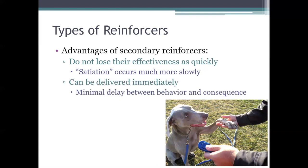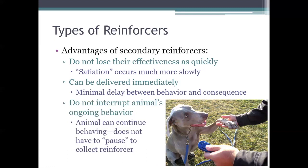Another advantage of using the clicker as a secondary reinforcer is that it can be delivered immediately — right after the dog does what you want it to do, you can click that clicker. You can present that secondary reinforcer immediately instead of after a delay like you'd have to do with a primary reinforcer. And also, with the clicker the dog doesn't have to stop what it's doing — the clicker is not going to interrupt the dog's ongoing behavior. But if you give the dog a treat, it will stop what it's doing because it's going to want to stop and eat the treat. That's why trainers often use secondary reinforcers like clickers when they work with their animals.